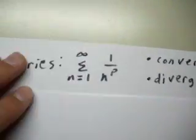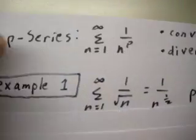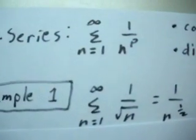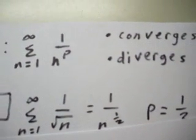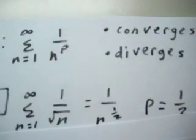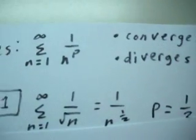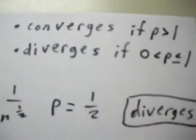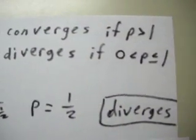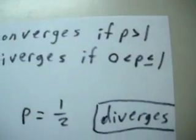Let's try it in example 1. We have the series from 1 to infinity of 1 over the square root of n. The square root is the same thing as the 1/2 power, so you have 1 over n to the 1/2. Since we're trying to get that 1 over n to the p format, we know that p equals 1/2 in this case. Since p is 1/2 and it's less than or equal to 1, it diverges.